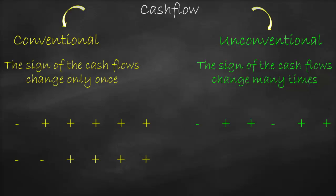With unconventional cash flow, the negative sign appears more than once during the project's lifetime. For example, we have a negative cash outflow in year one, positive in years two and three, then a negative cash outflow again in year four. Or the pattern could alternate: negative, positive, negative, positive throughout the project.